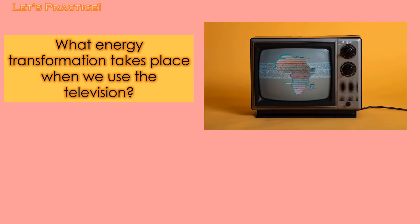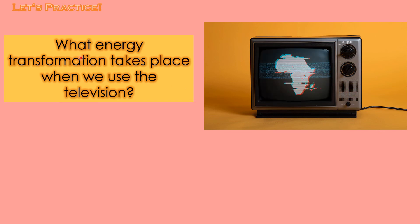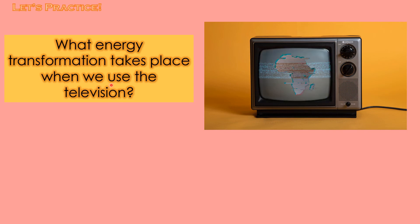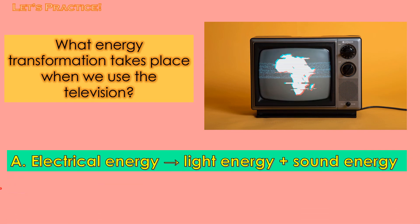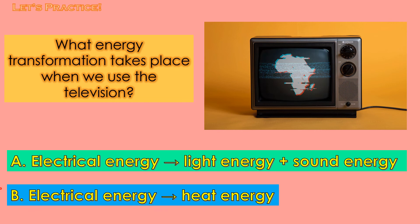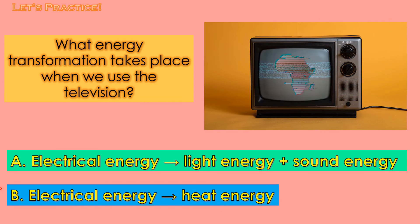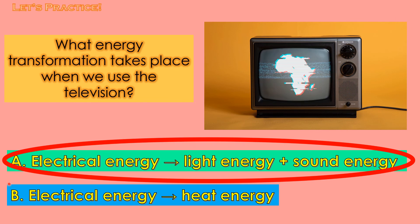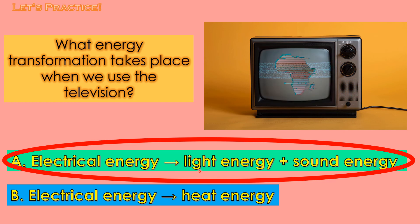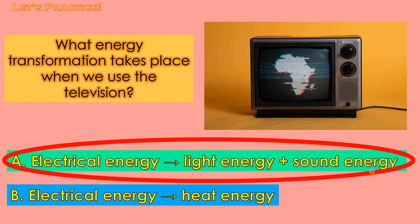Look at this one — it's a television. What energy transformation takes place when we use the television? A or B? One, two, and three. Good job, because it's A! Let's read: electrical energy transforms into light energy and sound energy. Good job!